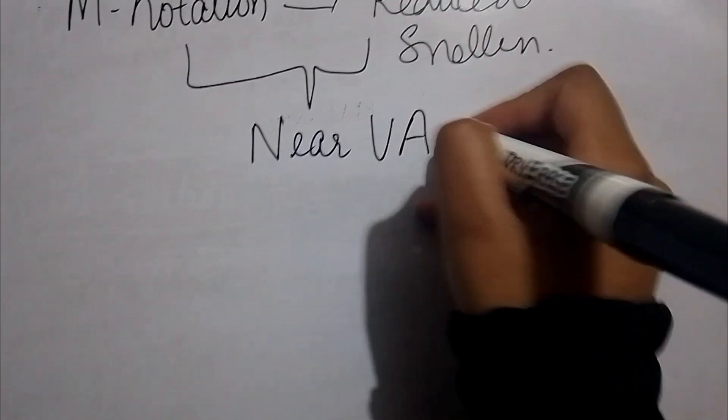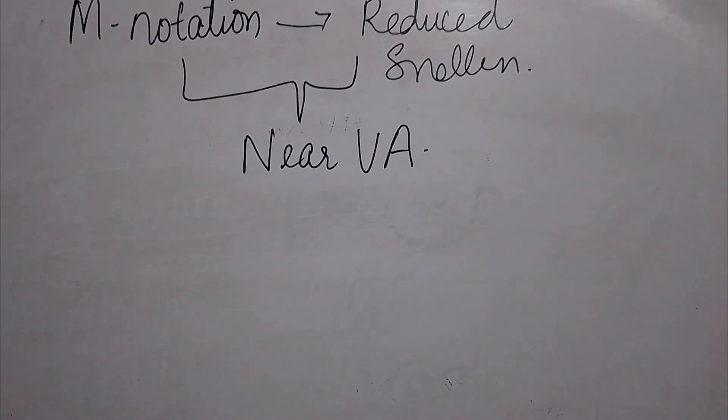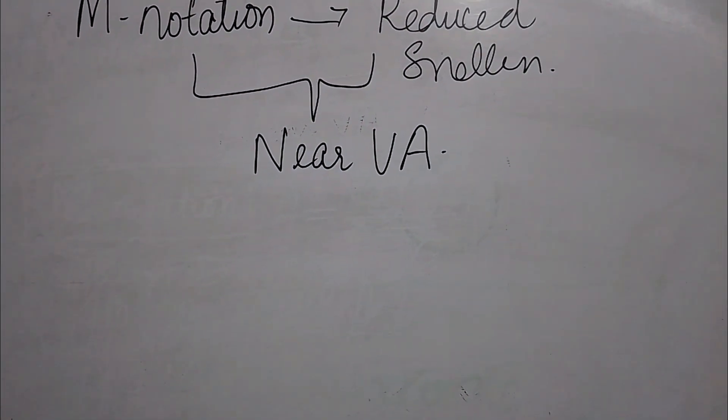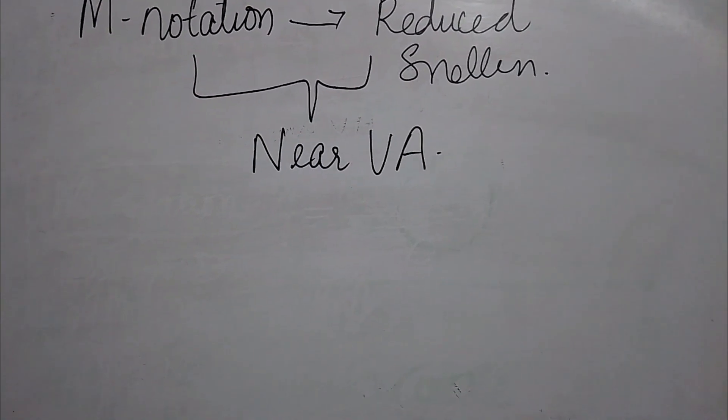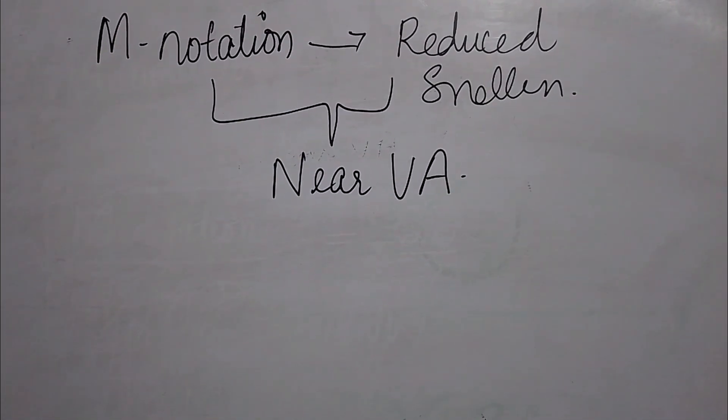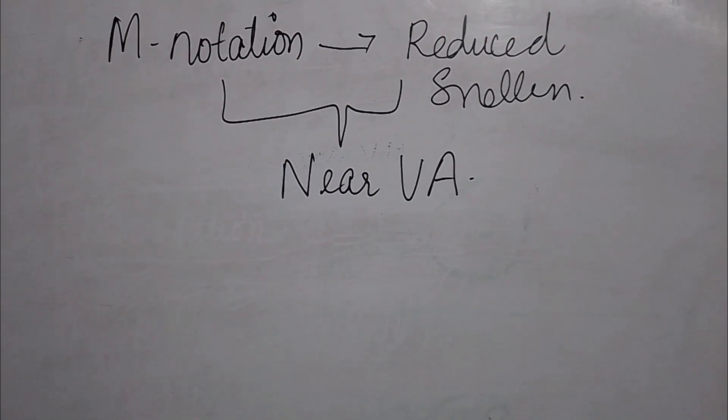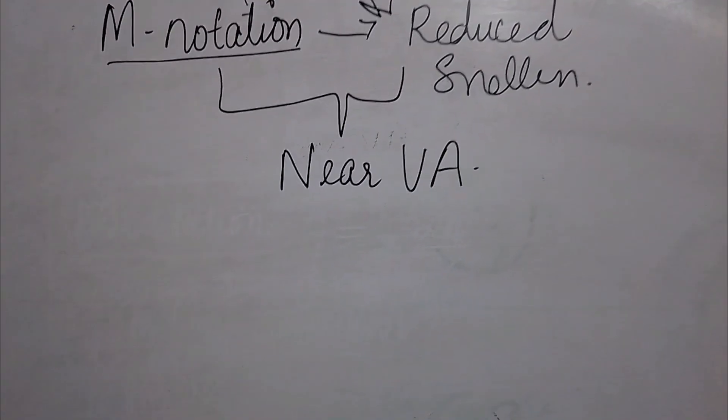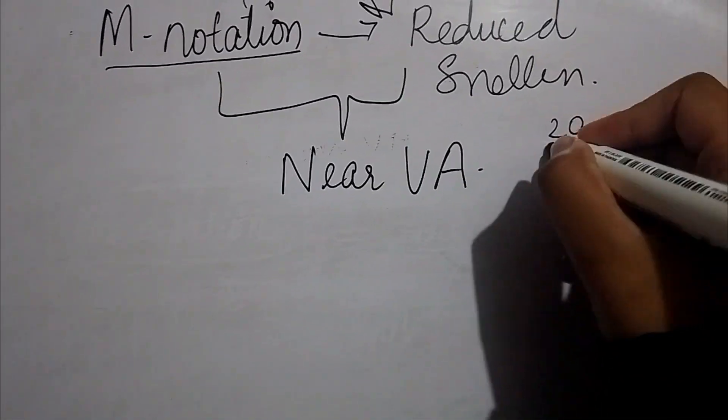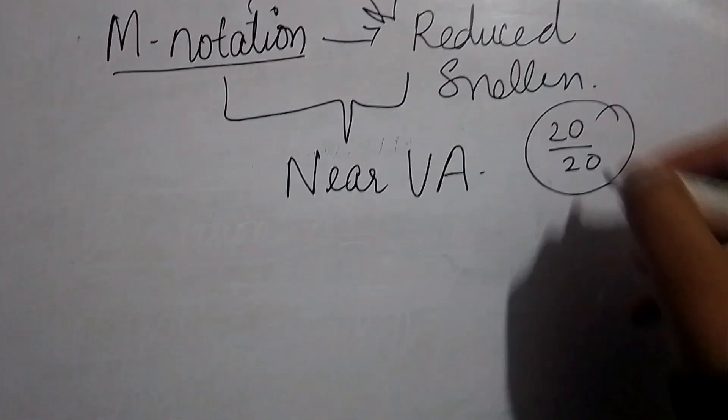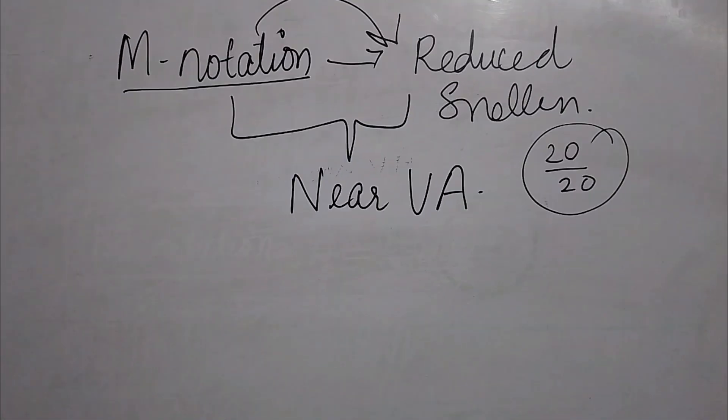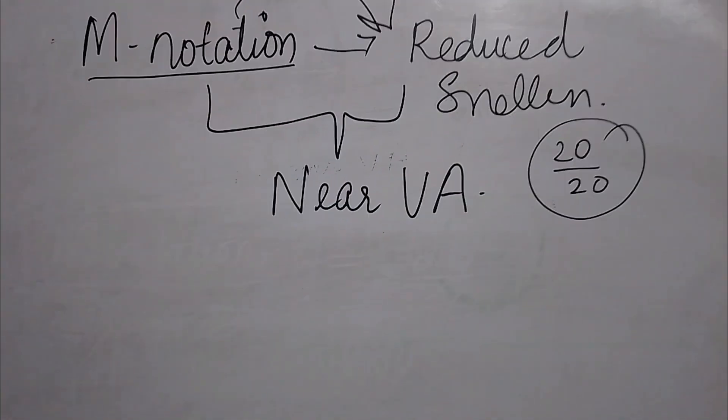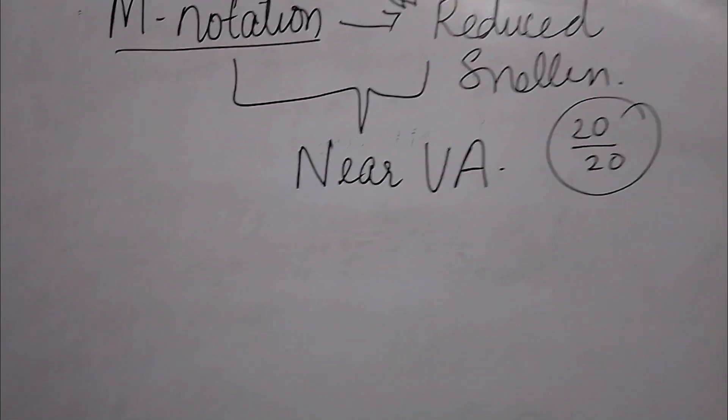M-notation is a chart used to measure near visual acuity, and reduced Snellen is also a type of near visual acuity chart. If we have taken the visual acuity from M-notation, and we want to convert that M-notation reading into the reduced Snellen format or into the 20 by 20 format, how can we convert it? Today we're going to learn this simple thing.